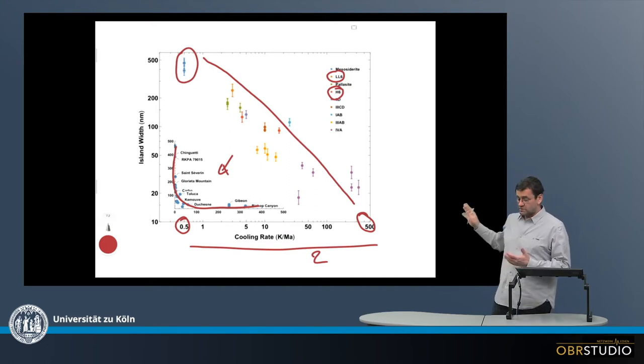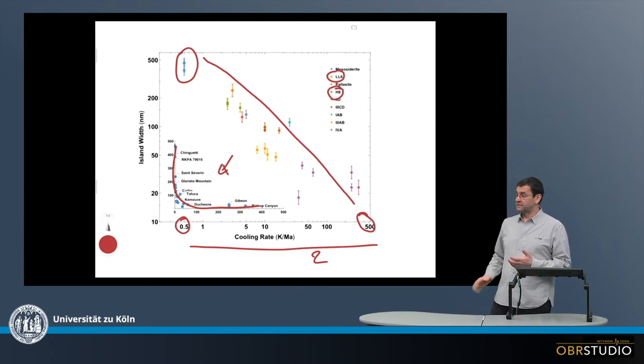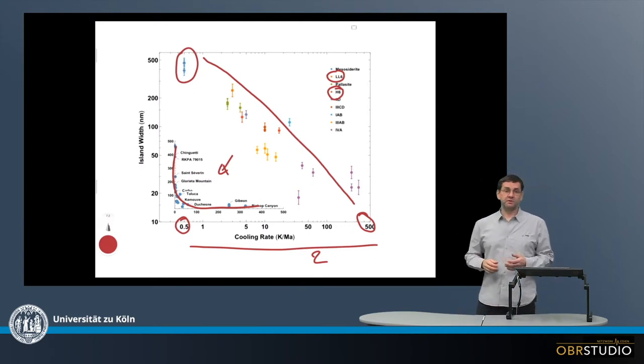So this is one of the possibilities to determine the cooling rate of iron meteorites. And it gives a first glance at what the cooling rates of iron meteorites are. And with this also, most likely for the entire parent body, because the iron meteorites are more on the core. So if these are cooled, most likely the entire asteroid is more or less cooled down.